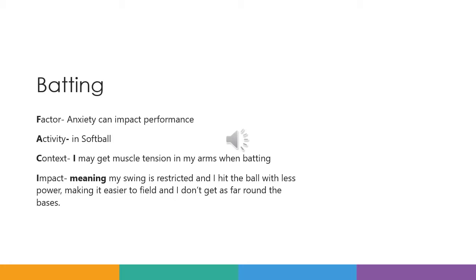For batting, your explain answer would be: Factor — anxiety can impact performance. Activity — in softball. The context — I may get muscle tension in my arms when batting. And the impact would be: meaning my swing is restricted and I hit the ball with less power, making it easier to field and I don't get as far around the bases. That's the full impact on performance. Make sure you add in all that detail to your answers.